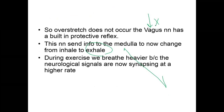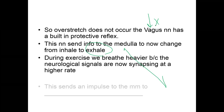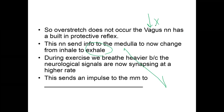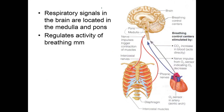During exercise we breathe heavier because the neurological signaling is faster. When you're just sitting at rest, you have that slow neurological spark, but once you start exercising the spark is faster, forcing you to breathe faster. Simultaneously, heart rate goes up and you get rid of byproducts like carbon dioxide. The pons and medulla are the areas of the brain stem that are the breathing control centers.